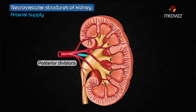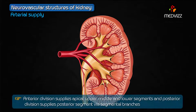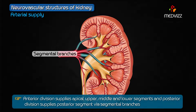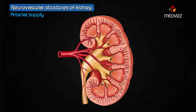The anterior division mainly supplies the apical, upper, middle, and lower segments, while the posterior division supplies the posterior segments via the segmental branches.